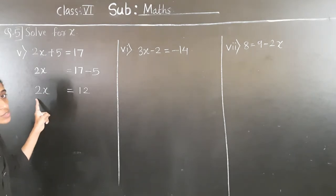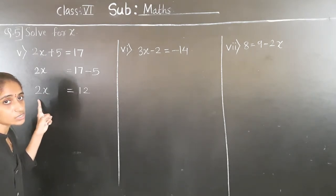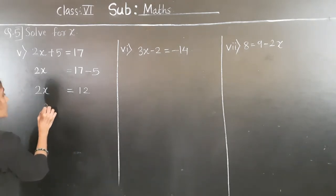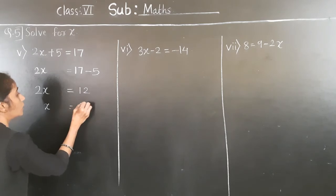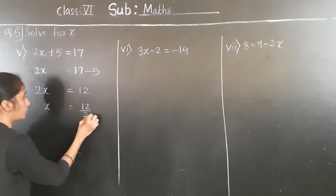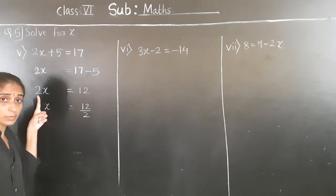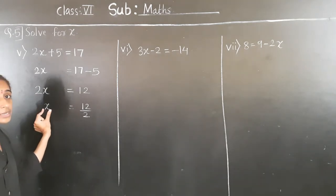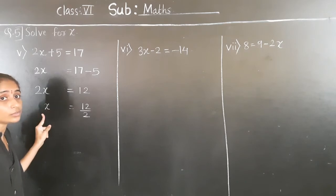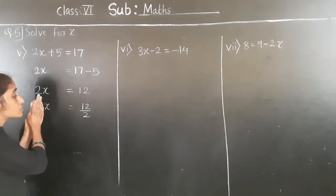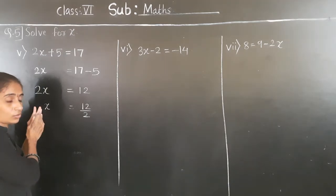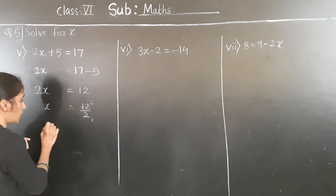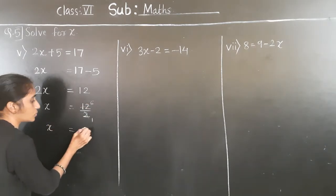Now 2x means 2 multiplied by x — 2 is here multiplied. If we transfer 2 to the right hand side it becomes division. So x is equal to 12 divided by 2. We don't write 2 on the left again because we are transferring it. 2 sixes are 12, so x is equal to 6.